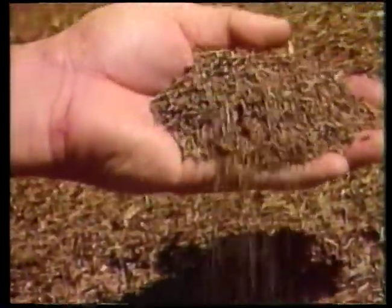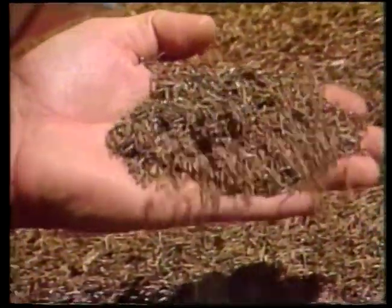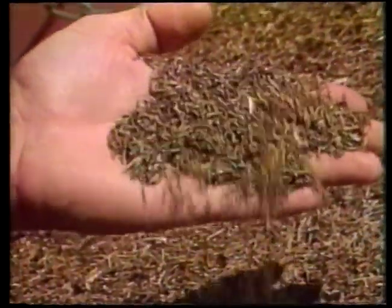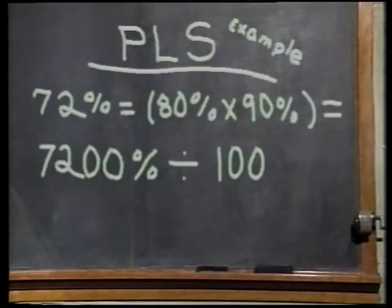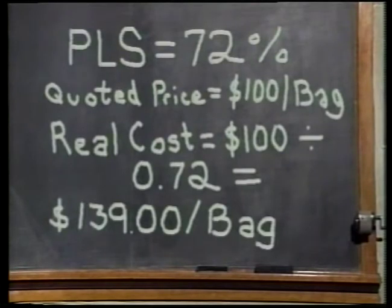Pure live seed percentage describes the pureness and germinability of a seed lot. It is calculated by multiplying the percent purity and percent germination and dividing by 100. Pure live seed is very useful to compare the worth of different seed lots. The real cost of seed can be determined by dividing the quoted selling price by the decimal conversion of pure live seed percentage.